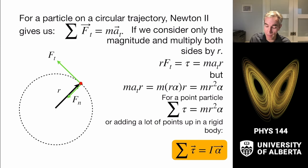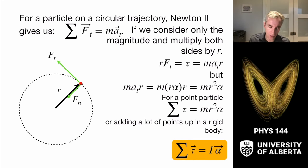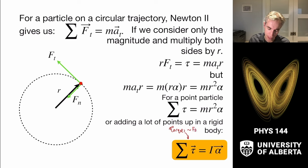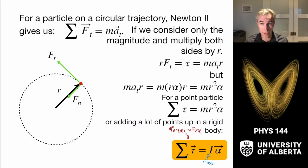This is our analog of Newton's second law: torques are like forces, the moment of inertia is the equivalent of mass, and alpha (angular acceleration) is the equivalent of linear acceleration. This is F = ma, just angular style.